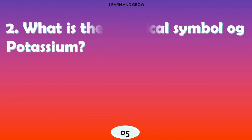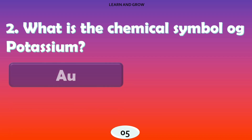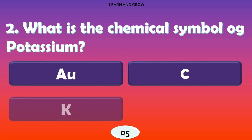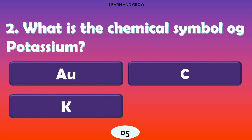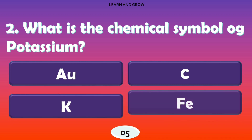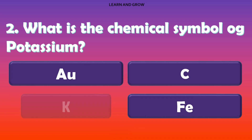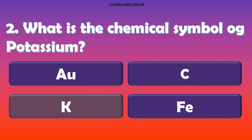What is the chemical symbol of potassium? The chemical symbol of potassium is K.